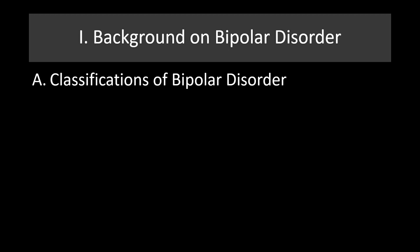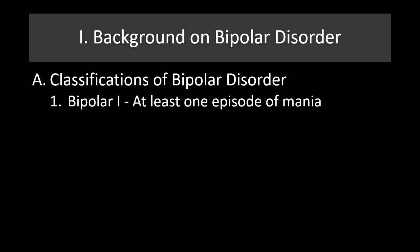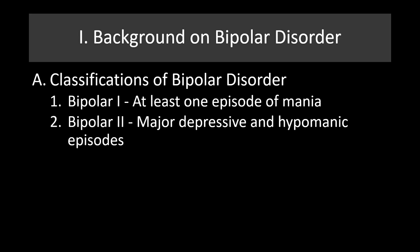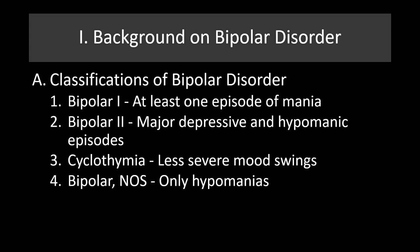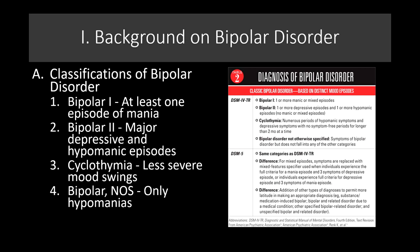Starting with a background on bipolar disorder, there are different classifications. Bipolar 1 is when a person has had at least one episode of mania. Most people have had more than one episode. Bipolar 2 involves a major depressive episode and hypomanic episodes. Cyclothymia is less severe mood swings, less severe mania — hypomania — and less severe depression, but still can be very difficult to live with. Bipolar not otherwise specified generally includes only hypomanias.